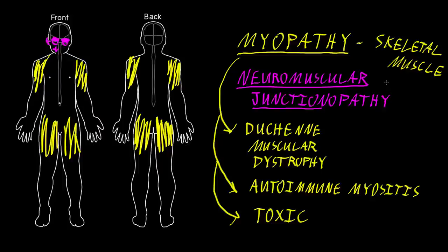In addition, many of these disorders have a characteristic which is that they tend to fluctuate — meaning the weakness that occurs often gets better and worse throughout the course of each day, or from day to day or week to week. This is quite different from the myopathy syndromes, very few of which show much fluctuation like the disorders that affect the neuromuscular junctions do.